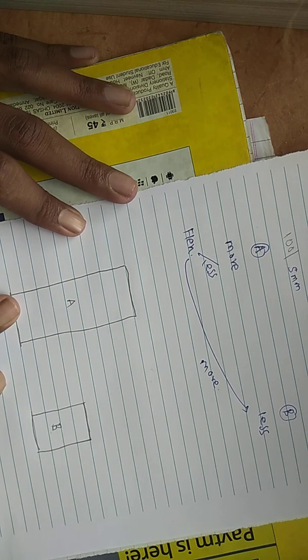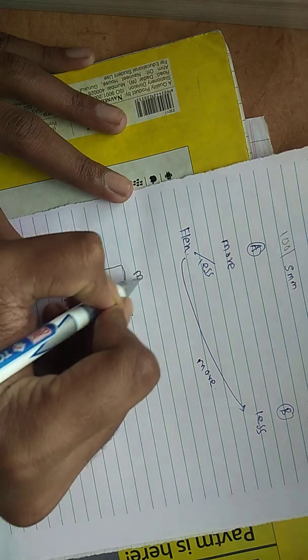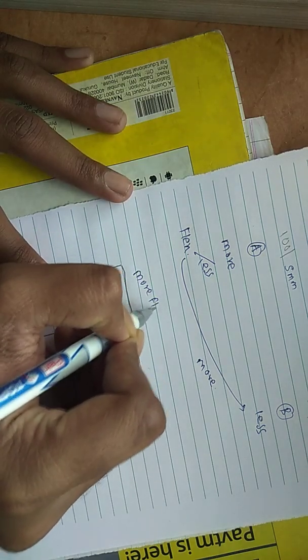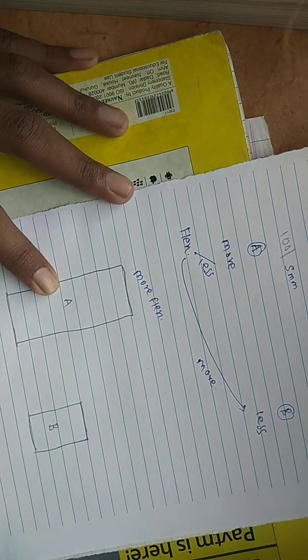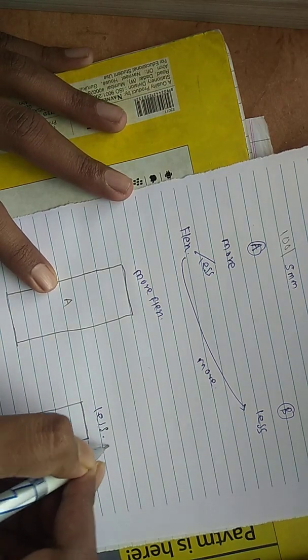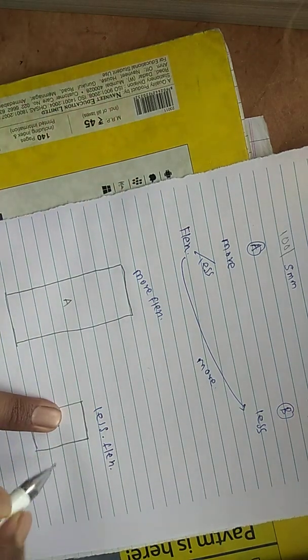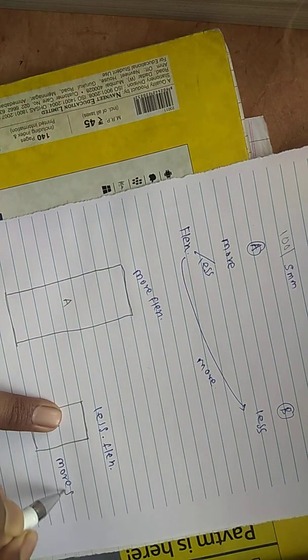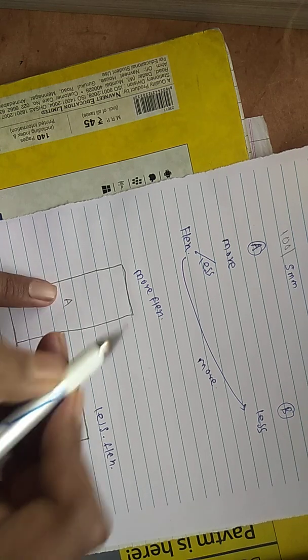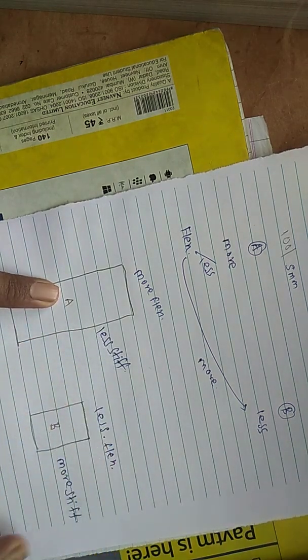Now I would like to tell you the answer. Building A will be more flexible, and this will be less flexible. That means this is more stiff and this building is less stiff.